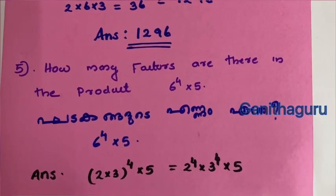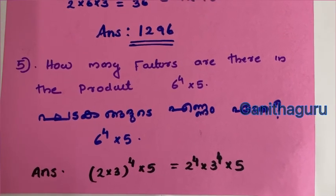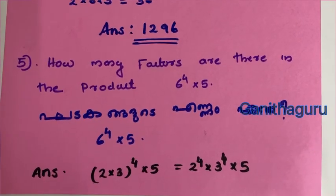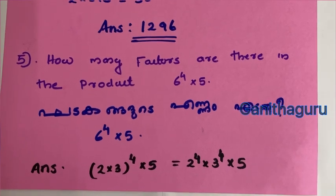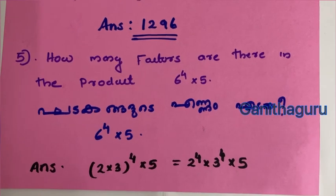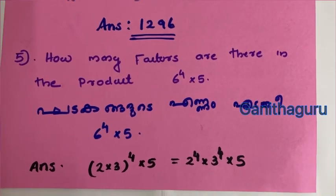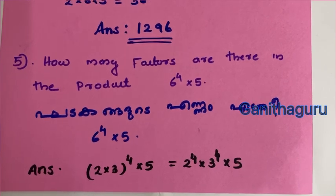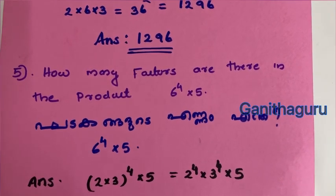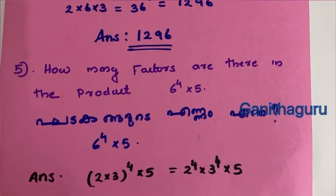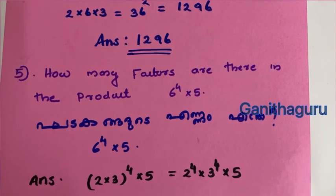How many factors are there in the product 6 raised to 4 into 5? For 6 raised to 4: power is 4, so 4 plus 1 equals 5. For 5 raised to 1: 1 plus 1 equals 2. Total factors: 5 into 2 equals 10.